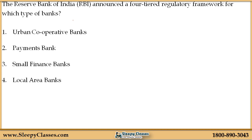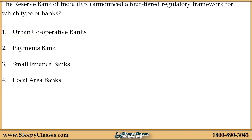Fifth question: The Reserve Bank of India announced a four-tiered regulatory framework for which type of banks? The options are: A — Urban Co-operative Banks, B — Payment Banks, C — Small Finance Banks, D — Local Area Banks. The right answer is Urban Co-operative Banks.